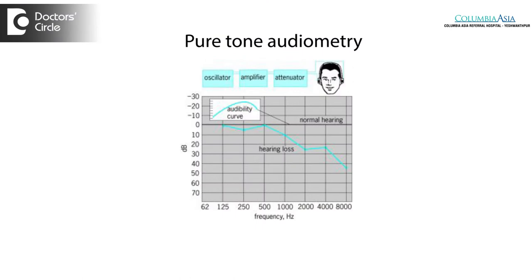Then there is pure tone audiometry, which is a purely subjective test requiring cooperation from the patient. They need to understand what the examiner wants them to respond to. Hearing is assessed using stimuli of various decibels and frequencies, which are then charted on a graph. This is the most commonly performed audiometry test and is called pure tone audiometry.